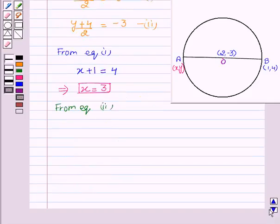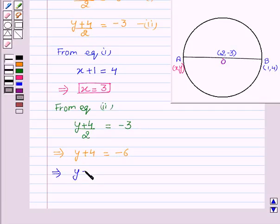And from equation second, that is (Y + 4)/2 equal to -3. This implies Y + 4 equal to -6. This implies Y equal to -6 - 4.